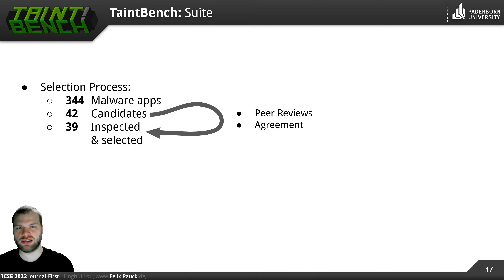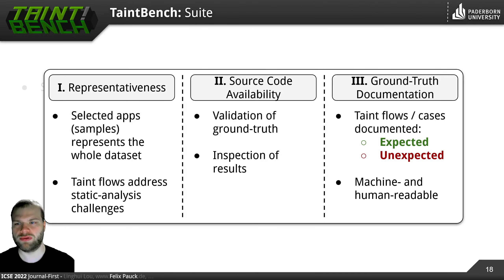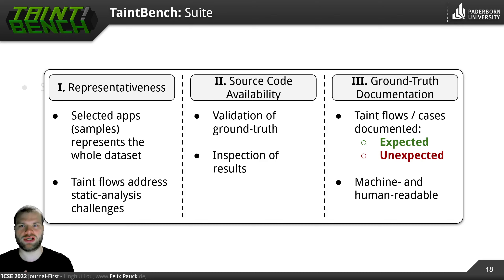From the 42 candidates, we removed three more during peer reviews. All the taint flows we could find in these candidates were documented by multiple authors, and only if they could come to an agreement did we add the taint flows and the respective apps to our set. We ended up with 39 apps fulfilling three criteria. The apps are representative — they represent the whole dataset and really address static analysis challenges. Similar to micro benchmarks like DroidBench with different challenge categories, we have all these challenges in our TaintBench suite as well, documented in the associated documentation of each benchmark app.